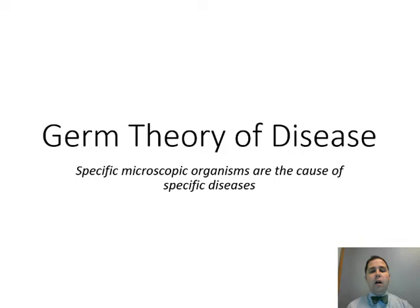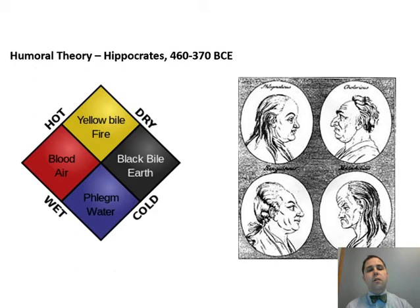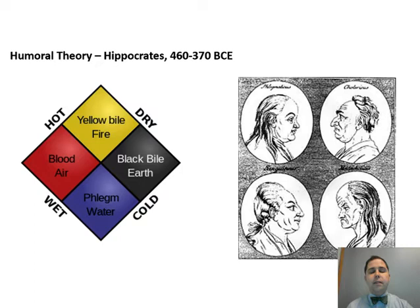So what did people think before they thought microscopic organisms caused diseases? That would have been the humoral theory. I'm telling you this just to give you some historical context for disease. So Hippocrates in around 460 and 370 BCE, as well as many other thinkers, developed this idea of a humoral theory, which posed that the human body contained four humors. You might have heard talk about this in some of your readings in humanities classes.